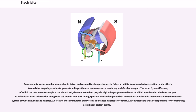Some organisms, such as sharks, are able to detect and respond to changes in electric fields, an ability known as electroreception, while others, termed electrogenic, are able to generate voltages themselves to serve as a predatory or defensive weapon. The order Gymnotiformes, of which the best known example is the electric eel, detect or stun prey via high voltages generated from modified muscle cells called electrocytes. All animals transmit information along their cell membranes with voltage pulses called action potentials, whose functions include communication by the nervous system between neurons and muscles. An electric shock stimulates the system and causes muscles to contract. Action potentials are also responsible for coordinating activities in certain plants.